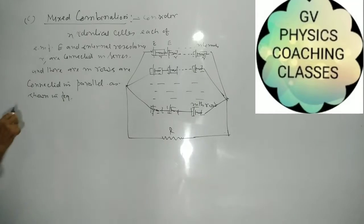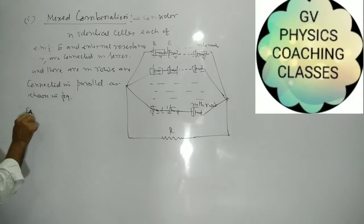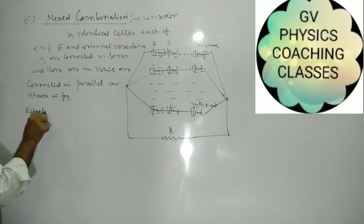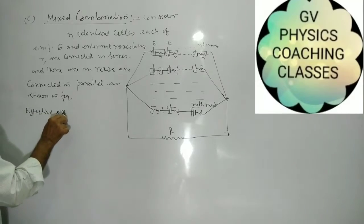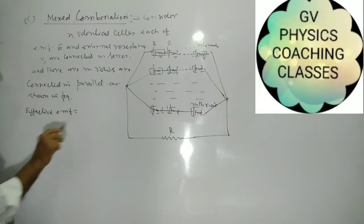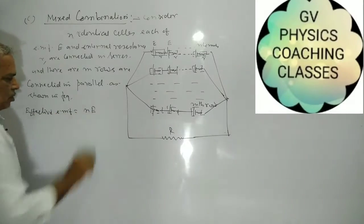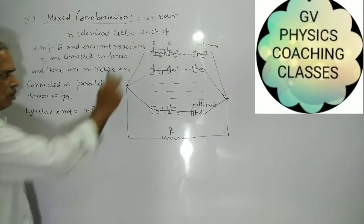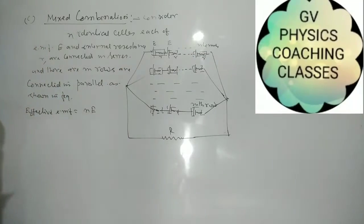The effective EMF of the combination is equal to NE, because there are N cells in each row.